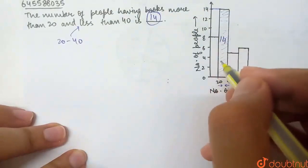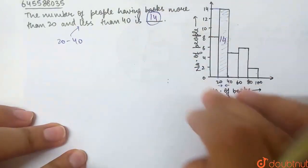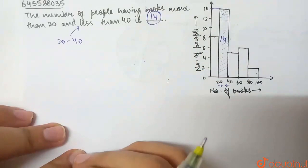So, simply, this bar graph can tell us how many people will be 14 and who will have 20 to 40 books.